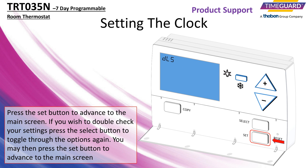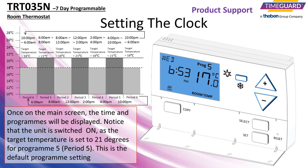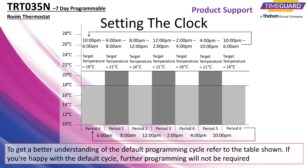If you wish to double check your settings, press the select button to toggle through the options again. You may then press the set button to advance to the main screen. Once on the main screen, the time and programs will be displayed. Notice that the unit is switched on, as the target temperature is set to 21 degrees for program 5, also known as period 5. This is the default program setting. To get a better understanding of the default programming cycle, refer to the table shown. If you're happy with the default cycle, further programming will not be required.